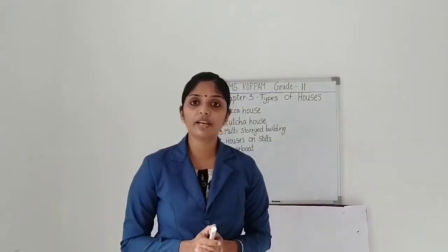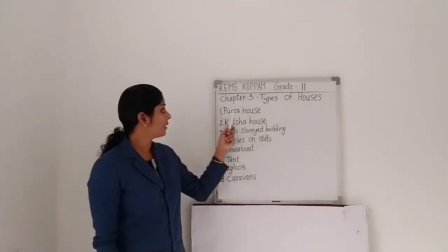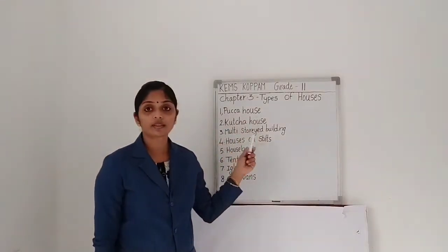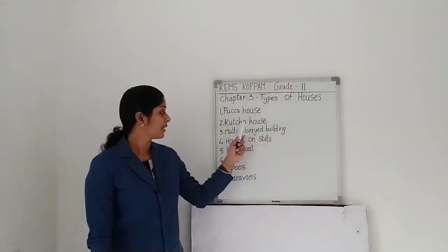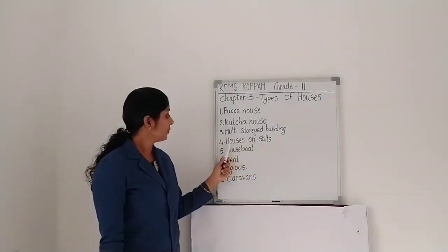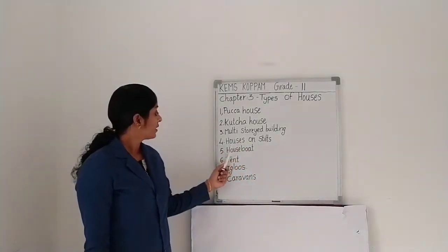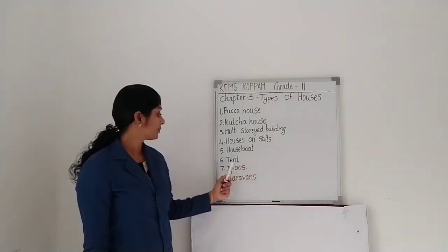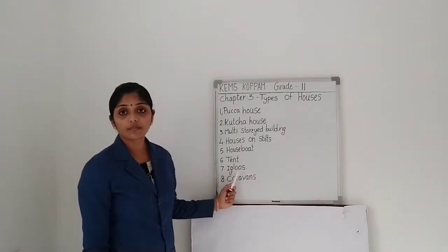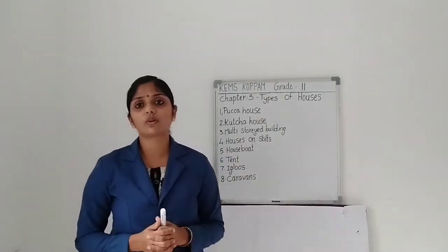So there are several types of houses around us. Let's check which are the different types. First: Pukka house. Second: Kaccha house. Third: Multistoried building. Fourth: Houses on stilts. Fifth: Houseboat. Sixth: Tent. Seventh: Igloos. Eighth: Caravans. So there are so many types of houses around us.